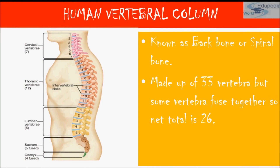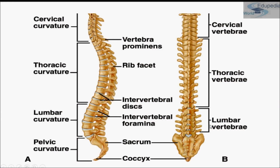The second category of the axial skeleton is the vertebral column, also known as backbone or spinal bone. It is made up of 33 vertebrae — the building blocks of the vertebral column. As age progresses, 33 vertebrae fuse to form a net total of 26 vertebrae. The curvature of the spinal cord is S-shaped, with cervical, thoracic, lumbar, and sacral curvatures, plus the coccyx bone — the tail bone.